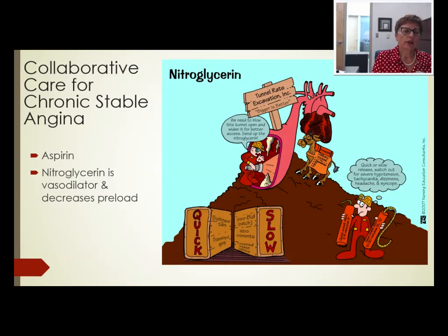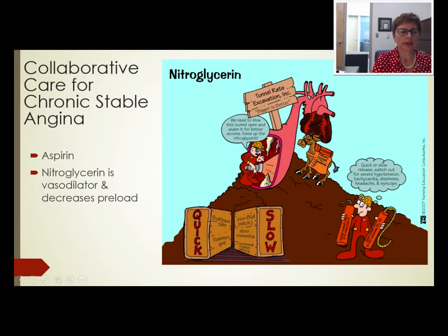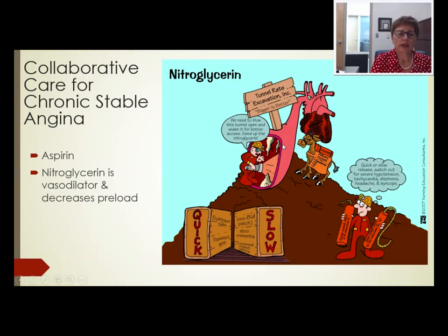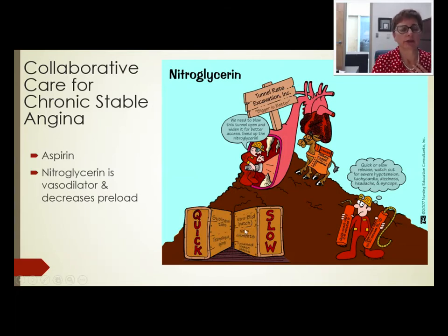Now let's turn to collaborative care for chronic stable angina. The first medication is aspirin, which is an antiplatelet that can help prevent platelets from clumping around blockages in the coronary arteries. Nitroglycerin is a vasodilator that decreases preload so the heart doesn't have to work as hard.